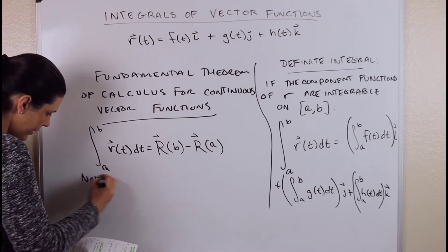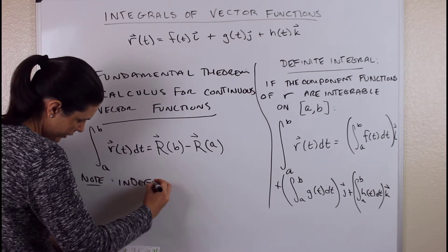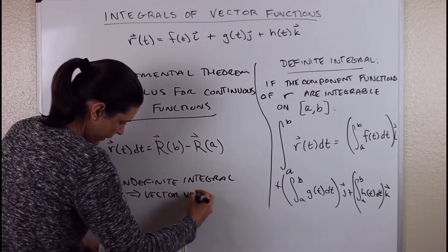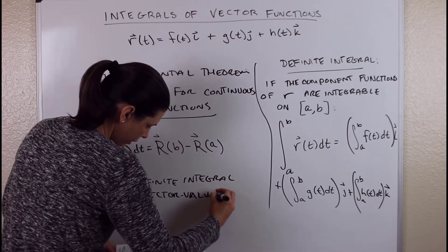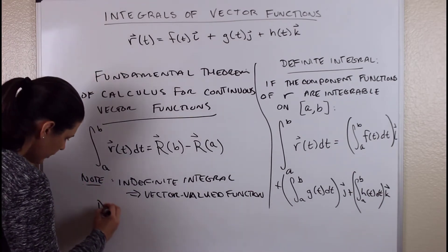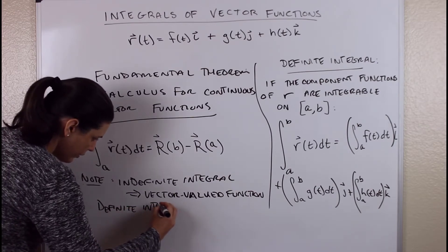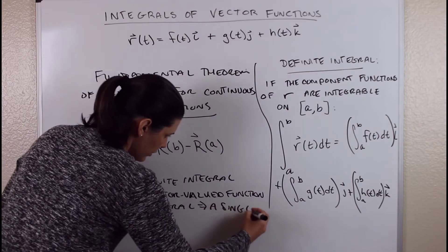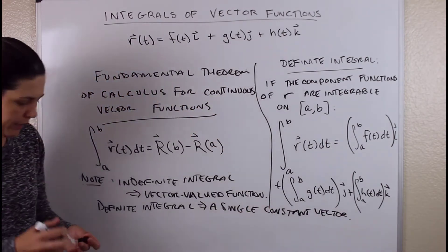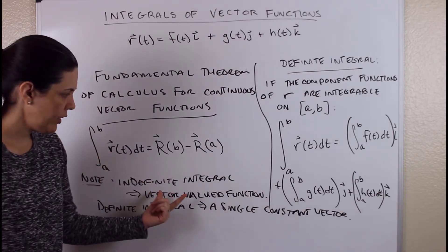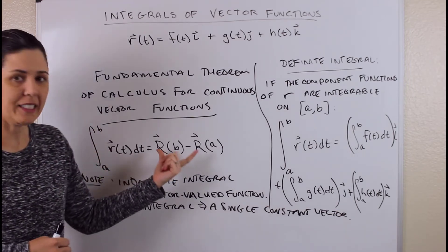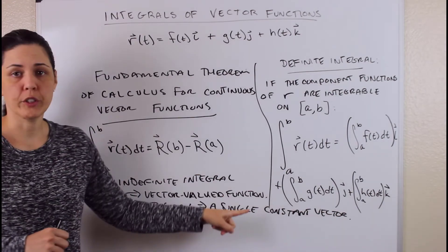An important note: the indefinite integral gives you a vector-valued function, but the definite integral gives you a single constant vector. If you don't have limits of integration, your result is a vector-valued function where you can input T values. With a definite integral you plug in values for T and get a single constant vector — not a vector function. Just a slight difference there.